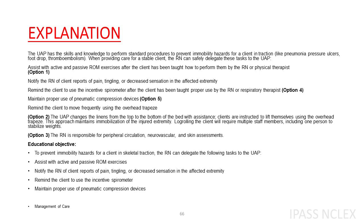Option 2. The UAP changes the linens from the top to the bottom of the bed with assistance. Clients are instructed to lift themselves using the overhead trapeze. This approach maintains immobilization of the injured extremity. Logrolling the client will require multiple staff members, including one person to stabilize weights. Option 3. The RN is responsible for peripheral circulation, neurovascular, and skin assessments. Educational objective: the RN can delegate ROM exercises, reminding use of incentive spirometer, and maintaining pneumatic compression devices to the UAP.